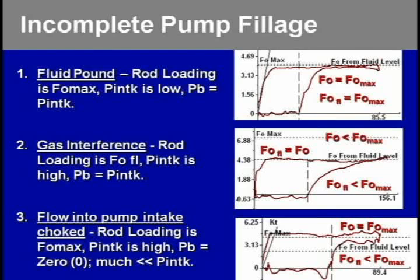If you have fluid pound, the rod loading is near FO max, the pump intake pressure is low, and the pressure inside the pump barrel is the intake pressure. FO from the pump card is near FO max, and FO from the fluid level is near FO max when you have fluid pound conditions. If you have gas interference conditions, the FO from the fluid level is pretty close to FO from the pump card — given the correct tubing fluid gradient and other calculations — and FO from the pump card is somewhat away from FO max. FO from the fluid level is away from FO max because there's a portion where the well is providing pressure to lift the fluid, and here the rods have to lift the fluid — that's the height of the pump card.